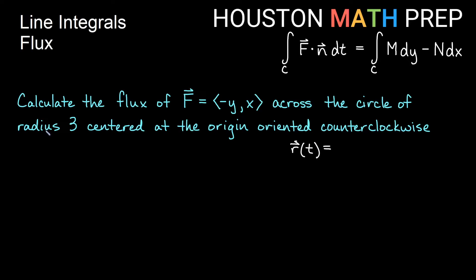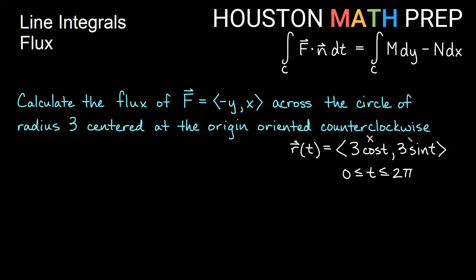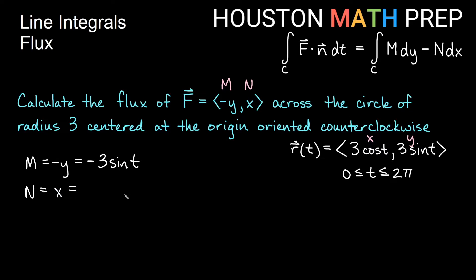We have the same path — the circle of radius 3 counterclockwise at the origin — so r of t is 3 cosine t, 3 sine t, from 0 to 2π. Our field this time is negative y comma x. So m in the vector field is negative y, and on our curve y is 3 sine t, making m equal to negative 3 sine of t. And n is x, so x is 3 cosine t.